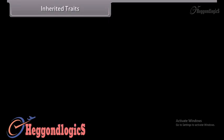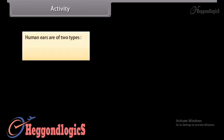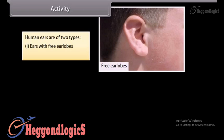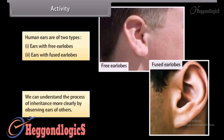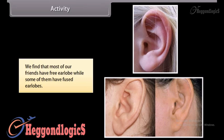Those traits which are controlled by genetic material and are obtained from parents through inheritance are called inherited traits. For example, human ears are of two types: ears with free ear lobes and ears with fused ear lobes. We can understand the process of inheritance more clearly by observing the ears of all students in the classroom. We find that most friends have free ear lobes while some have fused ear lobes.